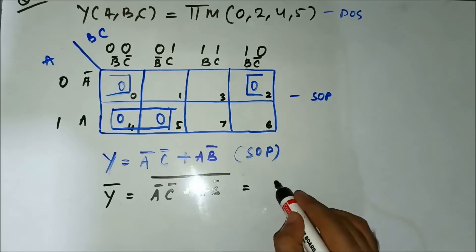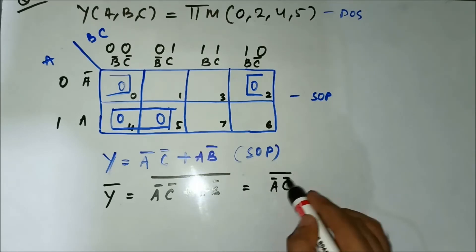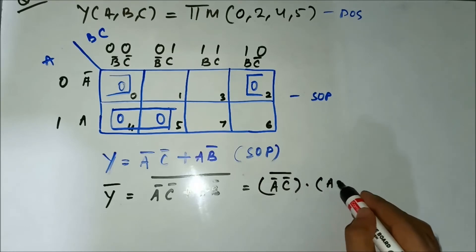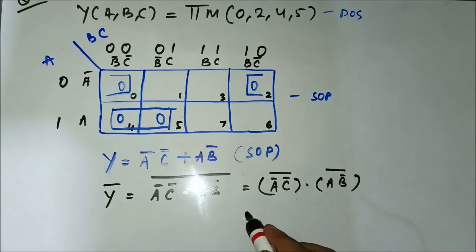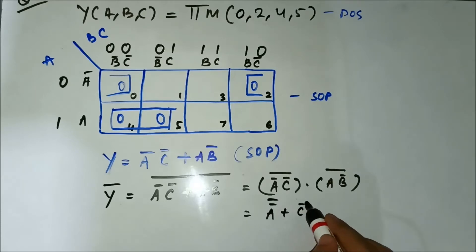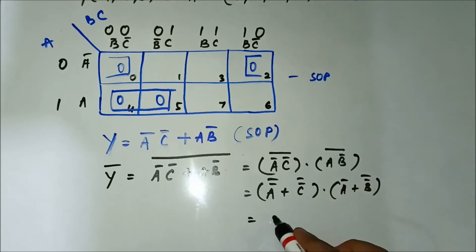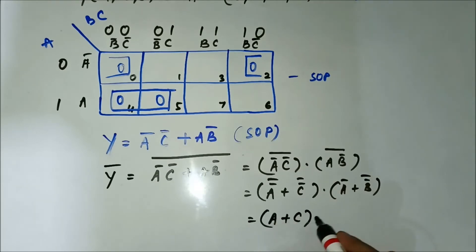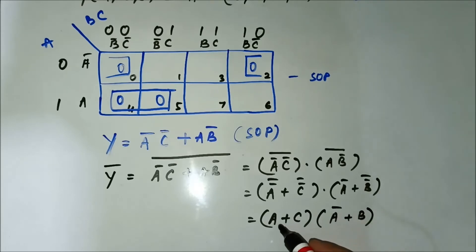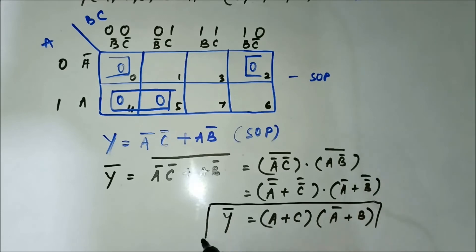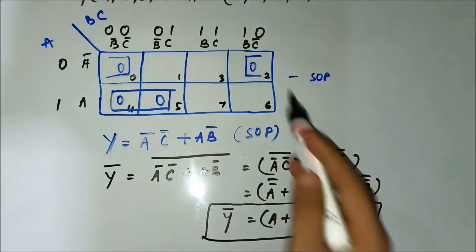We know in order to get the POS, we simply take the complement. So we take the complement of A̅C̅ + AB̅. Then we apply De Morgan's rule: it becomes (A̅C̅)̄ · (AB̅)̄. Applying De Morgan's theorem again, it will be (A̅̄ + C̅̄)(Ā + B̅̄), which simplifies to (A + C)(A̅ + B). This is the required POS simplified expression.